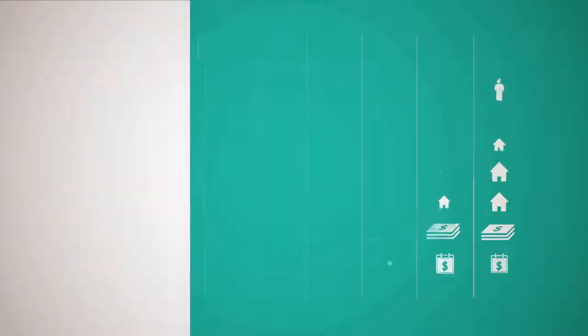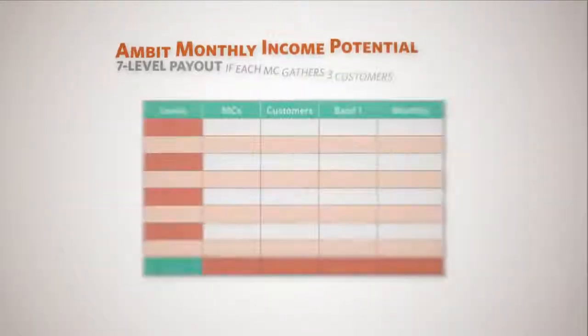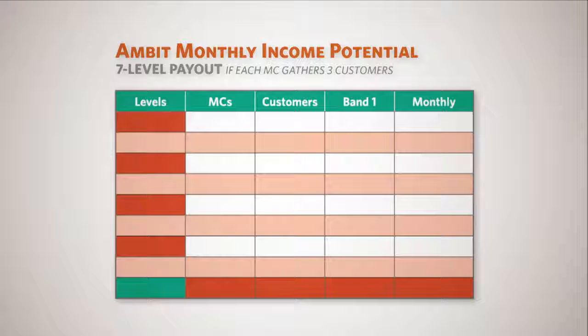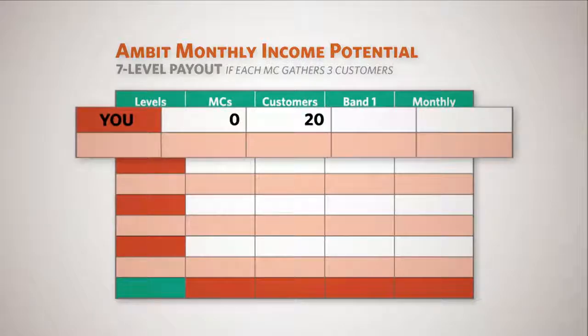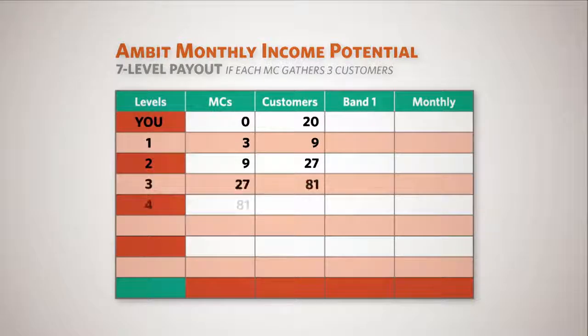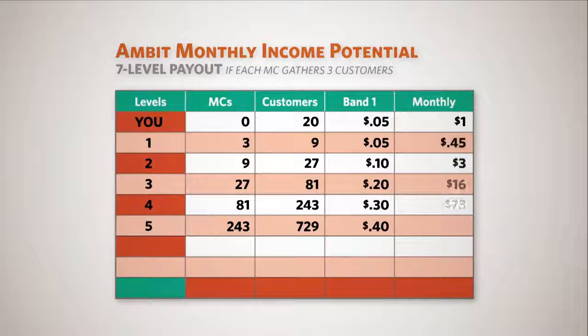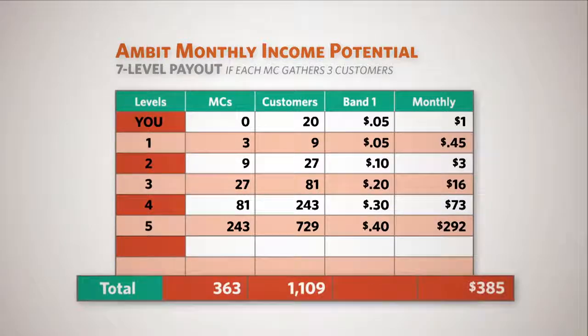While the math may be confusing, the idea is extremely simple. Here's one modest example. Let's say you sign up 20 customers and sponsor three consultants. If those three consultants sign up just three customers each, and this continues down through five levels of your organization, you would earn almost $400 a month, month after month.